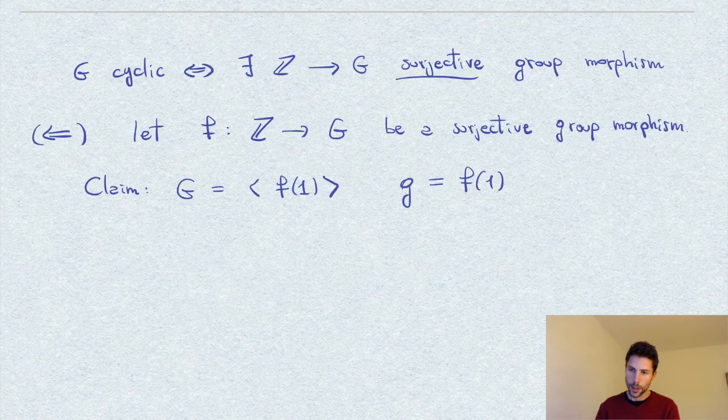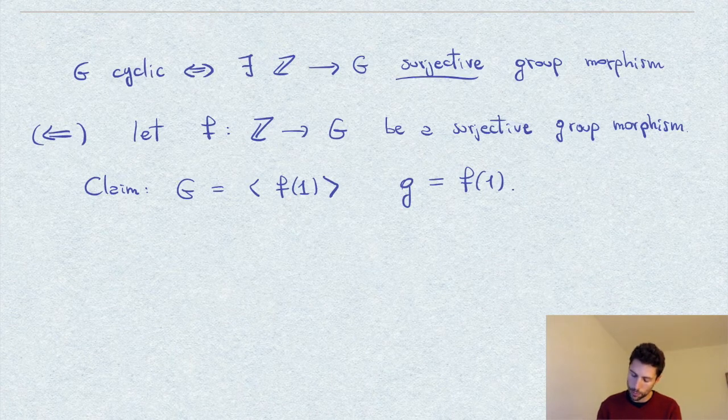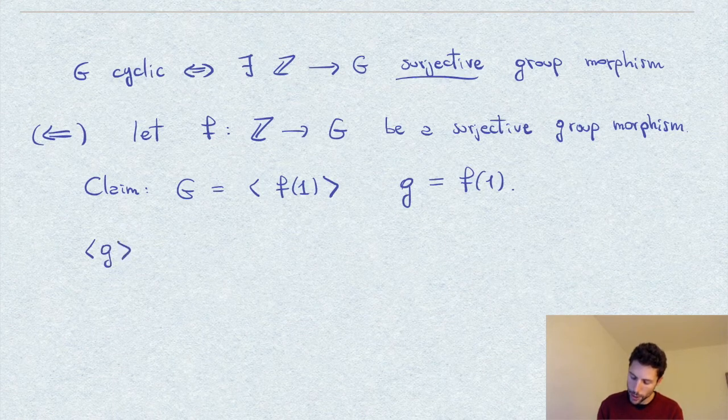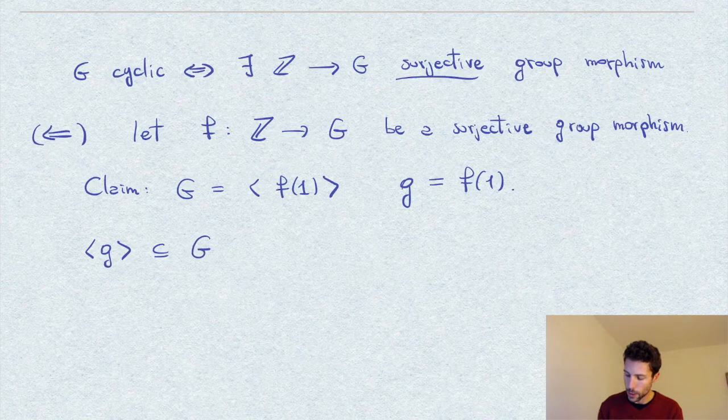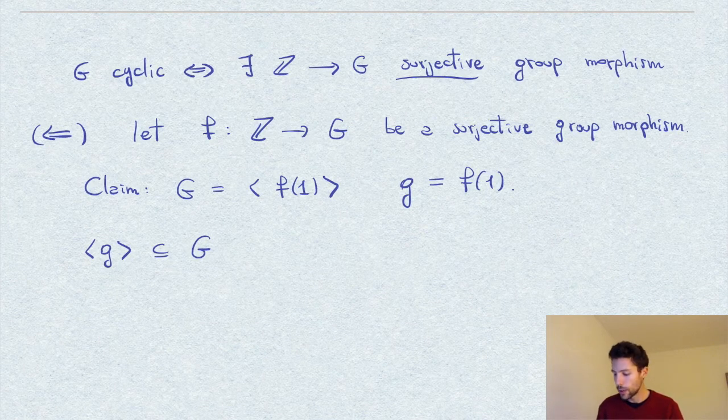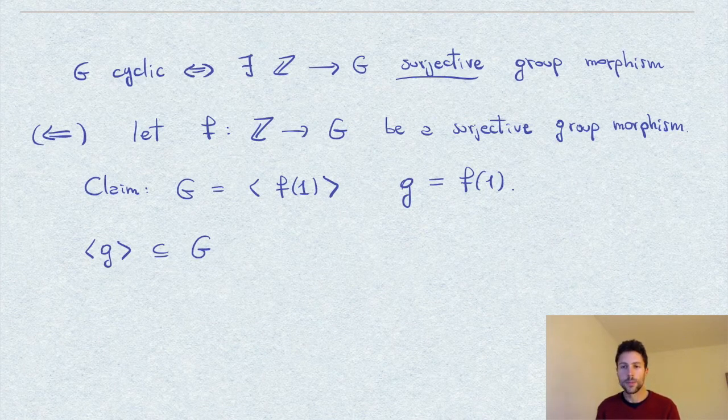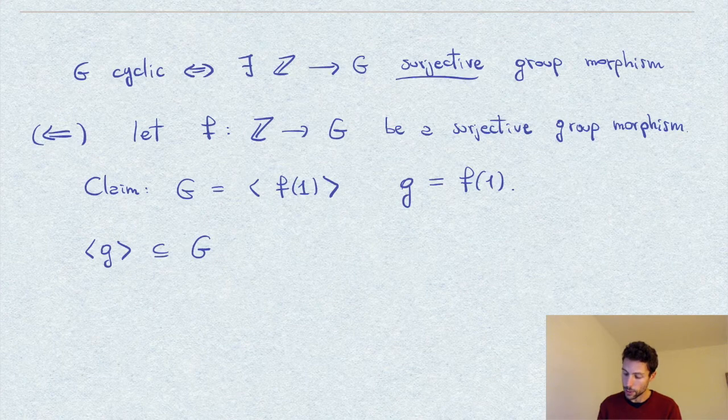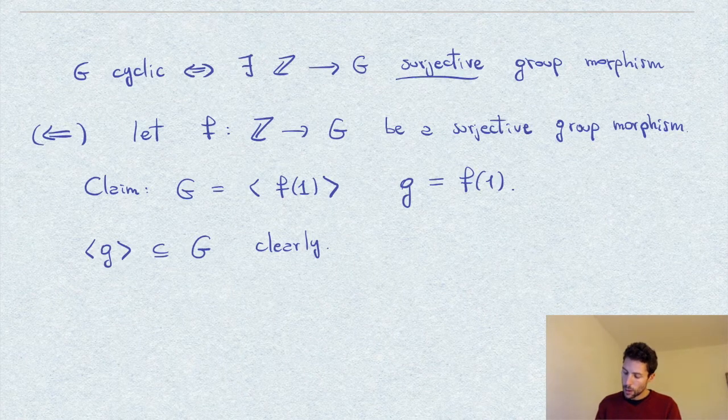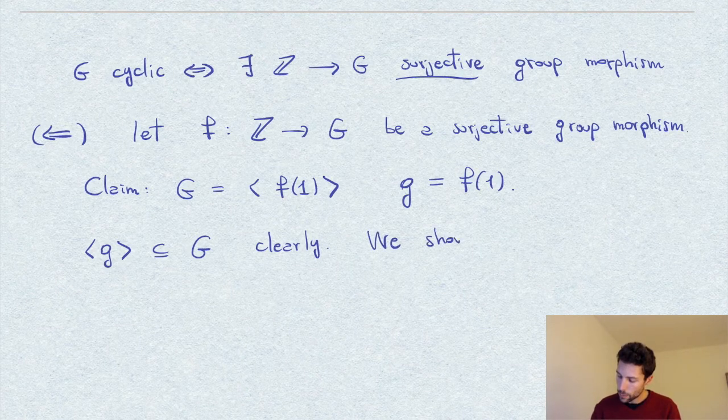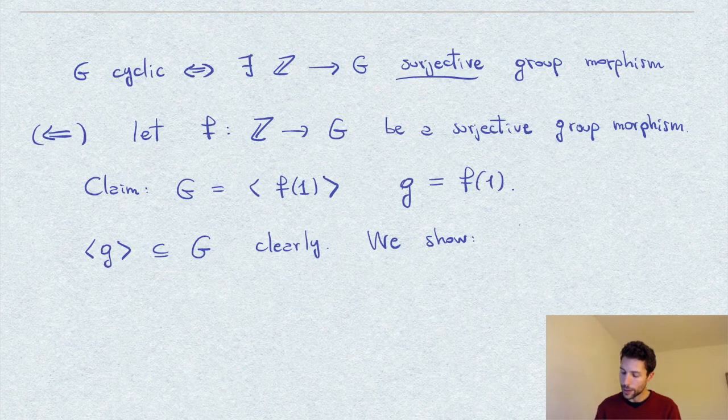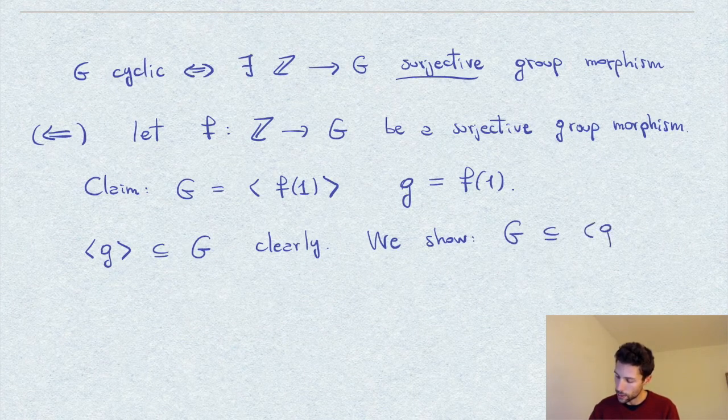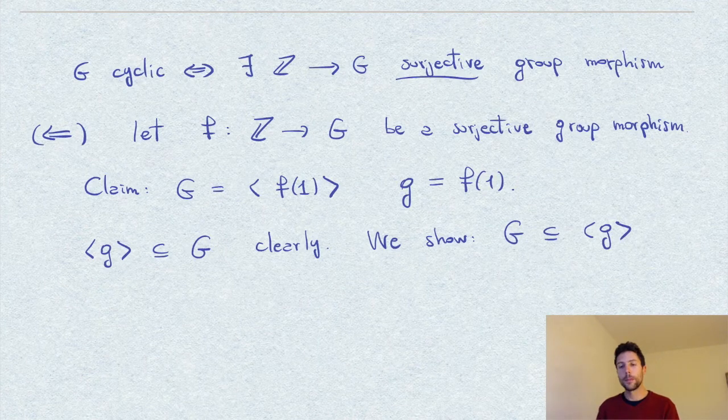So first, we immediately observe that the group generated by g is obviously contained inside the capital G, inside the group, since by definition, the element g is in the group, so the group generated by g has to stay, has to be in G. So we have to prove the other direction, namely that G is contained inside the group generated by small g.